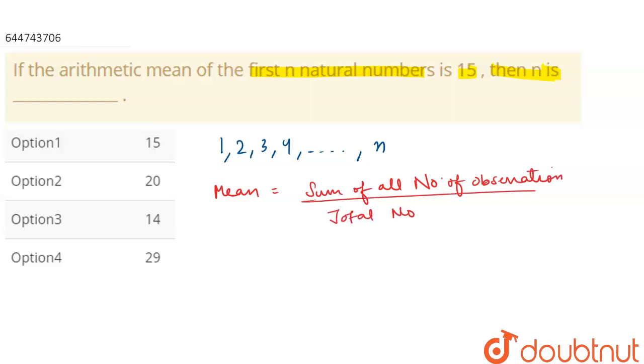We have mean equals 15, that is given. So we can write 15 equals the sum 1 plus 2 plus 3 plus up to n, divided by total number of observations, which is n. So it will be equal to n. Let's make it equation 1.